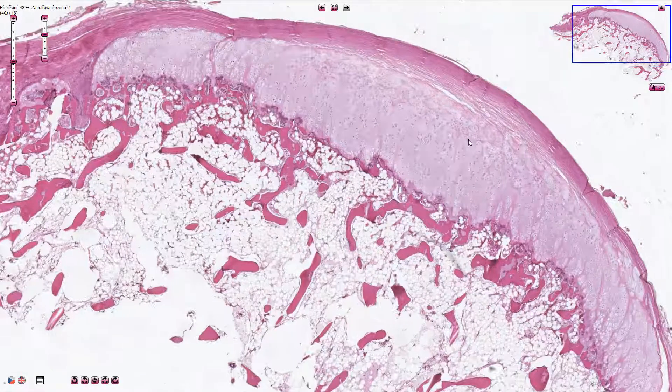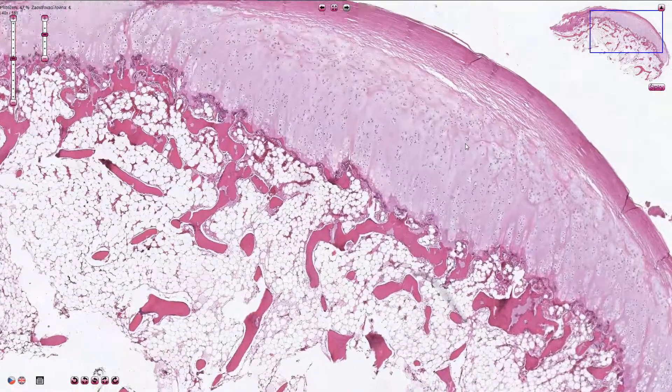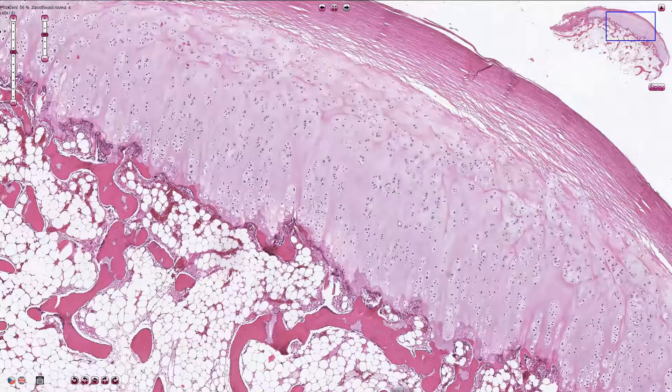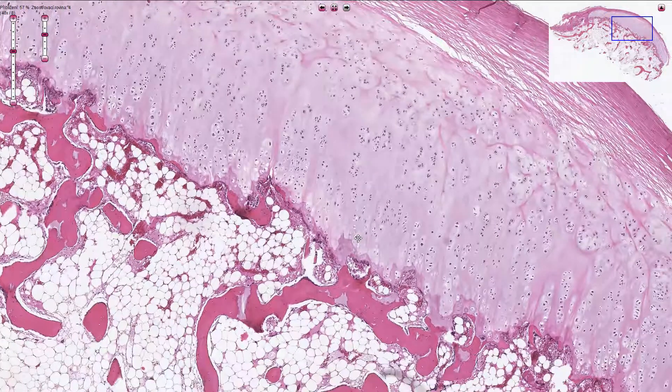The cartilage has normal small cellularity and is composed of bland lacunar cells. The cellularity is slightly higher in the deep levels of the cartilage. Chondrocytes are also slightly bigger as we go deeper.